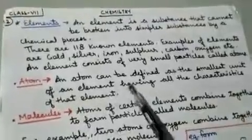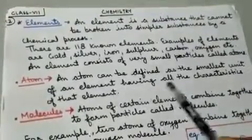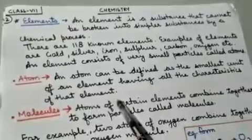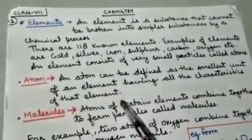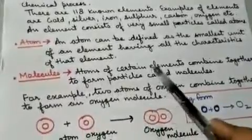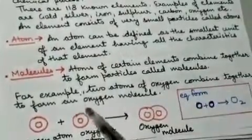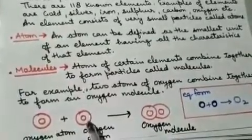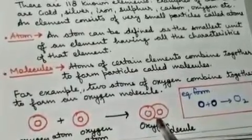What is an atom? An atom can be defined as the smallest unit of an element having all the characteristics of that element. When atoms combine together, they form molecules. Atoms of certain elements combine together to form particles called molecules. For example, two atoms of oxygen combine to form an oxygen molecule. In this diagram, you can see one atom of oxygen and another atom of oxygen; when both atoms combine, they form a molecule of oxygen. In equation form: one atom of oxygen plus another atom of oxygen gives O₂, the oxygen molecule.